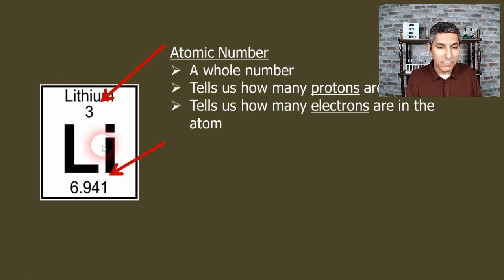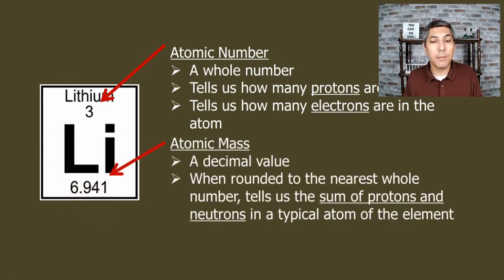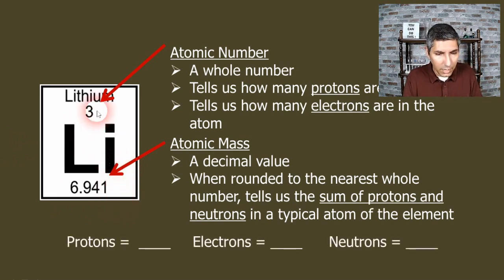Now we have another piece of information, that decimal number down here. This is called the atomic mass. Now the atomic mass, as we can see, is a decimal number. If you round that number off to the nearest whole number, it's going to tell you the sum of the protons and neutrons in a typical atom of that element. So if the atomic mass rounded off is the sum of the protons and neutrons, how can you calculate the number of neutrons by itself? Well all you have to do is take the rounded atomic mass and subtract the atomic number. Let's practice that. If we look at this element, the atomic number is three, so that means lithium has three protons, it has three electrons, and the number of neutrons is equal to seven minus three, so that's equal to four neutrons in a typical atom of lithium.